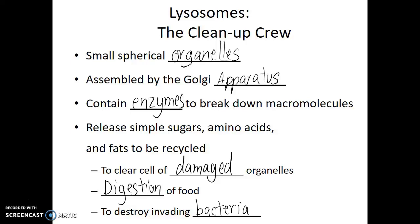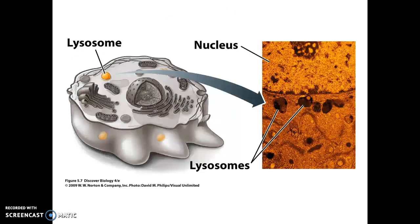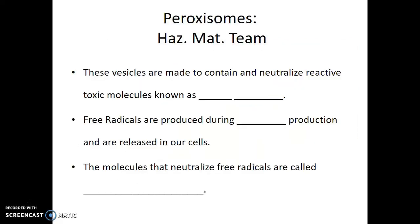Lysosomes are the cleanup crew — the janitorial staff of the cell — helping keep things neat and orderly, breaking down what needs to be destroyed, and serving as an extra layer of defense. Lysosomes are unique to animal cells and are found within the cytoplasm of those cells. The next group, also part of the cleanup team, deals specifically with hazardous materials — they're the hazmat team — and they're called peroxisomes.